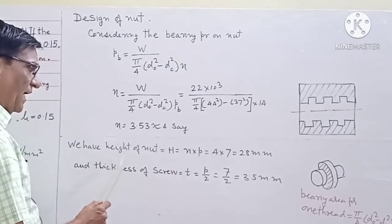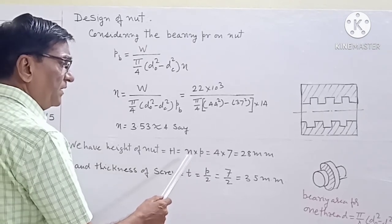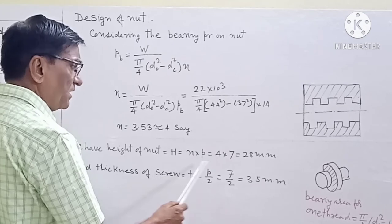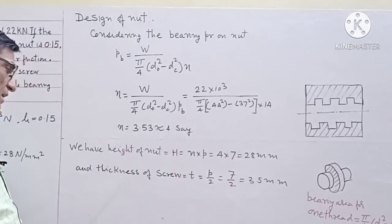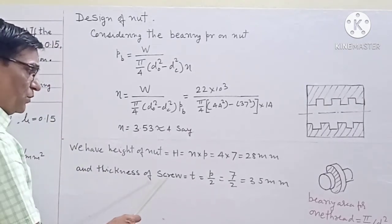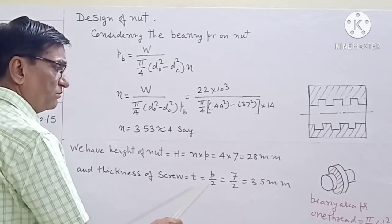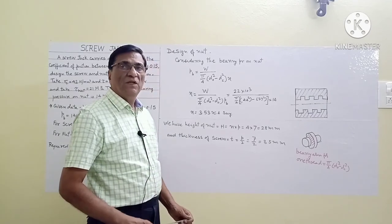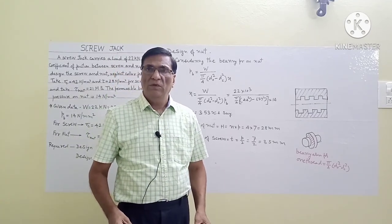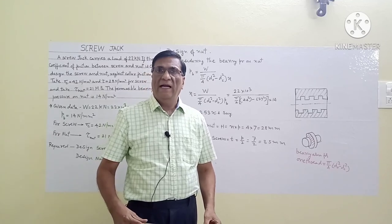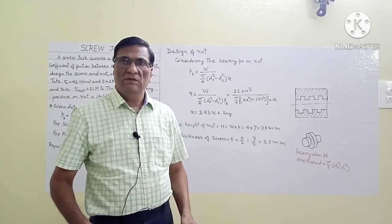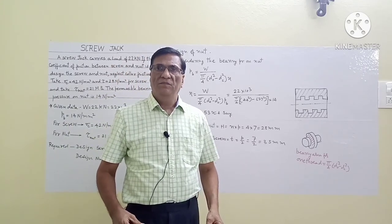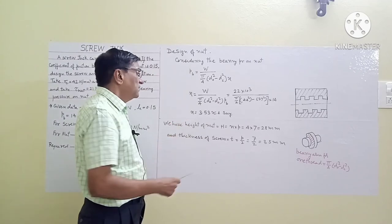The height of the nut h is equal to N multiplied by pitch P, which comes out to be 28 mm. The thickness of the screw thread t is equal to P/2, which comes out to be 3.5 mm. In this way, we have designed the screw of the screw jack and checked it for maximum shear stress, maximum compressive stress, and designed the nut.